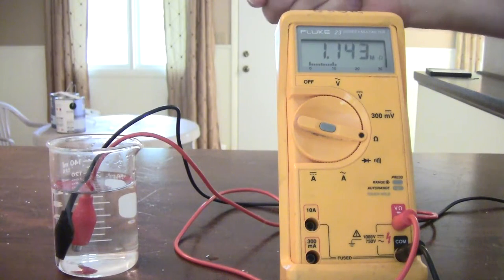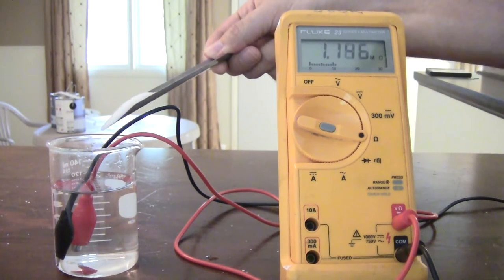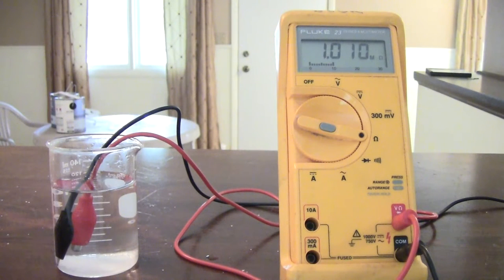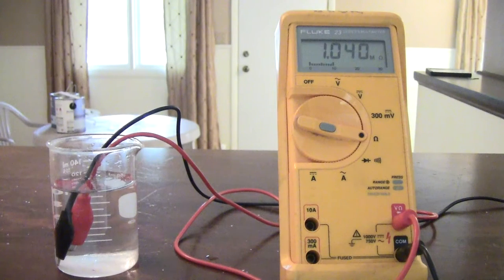Next, I'll add sucrose. As you can see, when I add sucrose, the resistance doesn't change very much. That makes sense, since, because it's a molecular compound, the sucrose isn't producing ions. And the solution still doesn't conduct electricity.